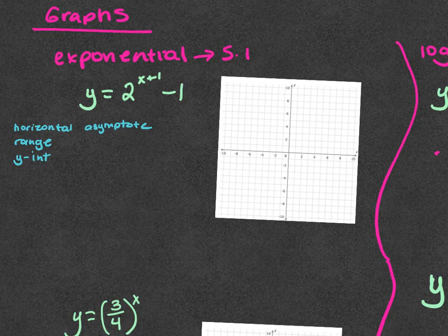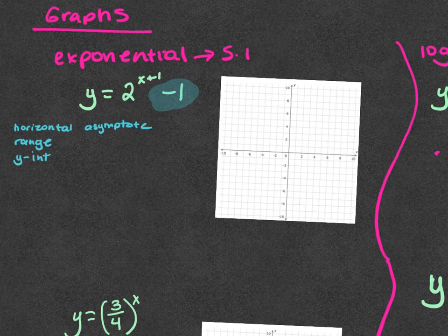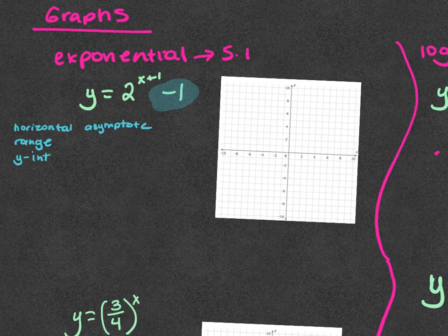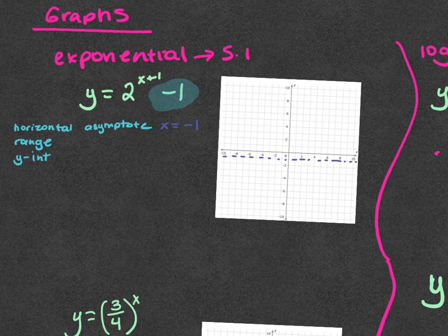That negative one tells me I'm shifting this down one. If there's no vertical shift — like on example B, there's none — then my horizontal asymptote is at zero. But because this shifts down one, my horizontal asymptote is at negative one. It should be written as y equals negative one.